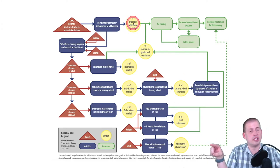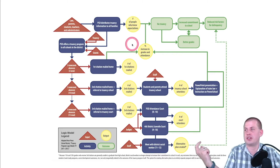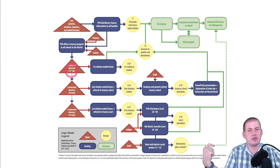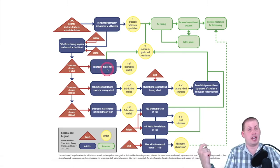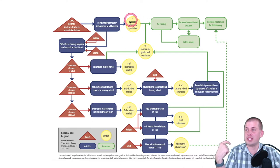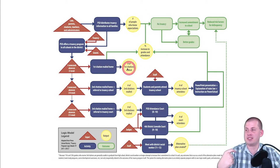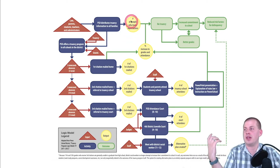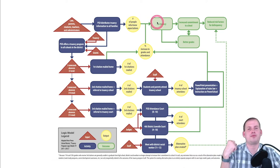The outputs are the easy-to-measure things. In the truancy program example, if students are absent five times in a row, a first citation is mailed to their home. The activity is the mailing of the citation; the output is the number of citations mailed, which the organization can actually measure. Each of these yellow things is something measurable — a direct result of one of the activities. The link between the yellow outputs and the green outcomes is the impact theory: having citations mailed leads to increases in grades and awareness of attendance expectations.